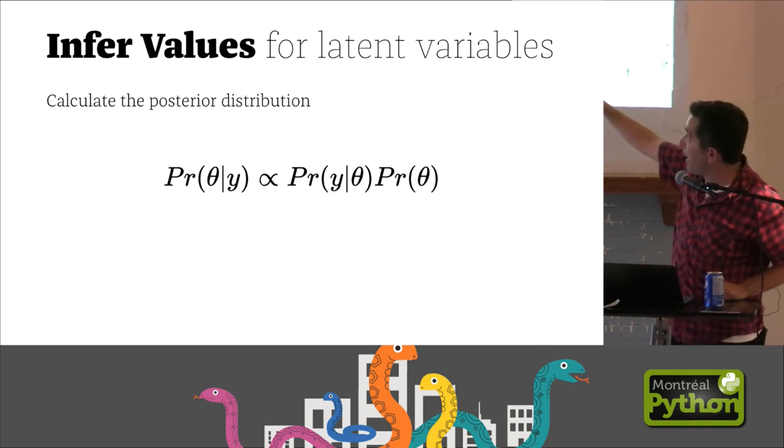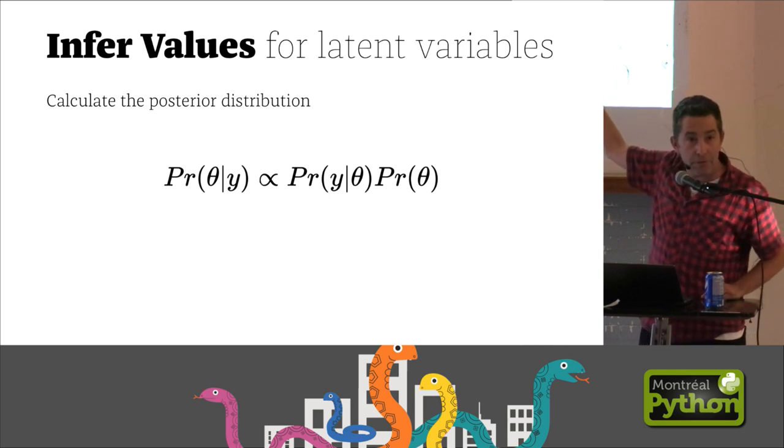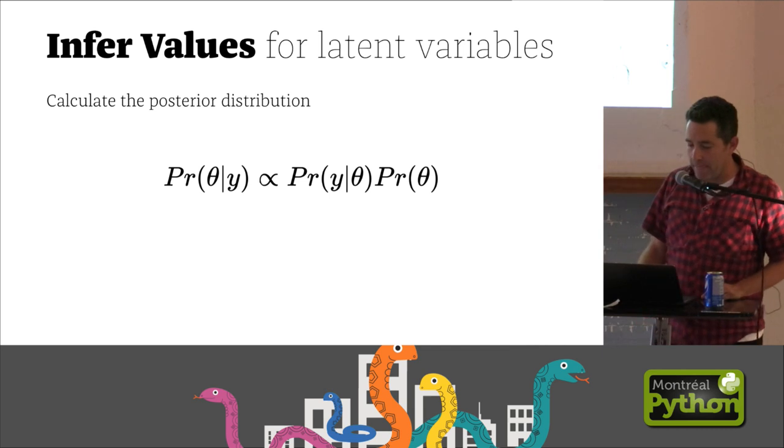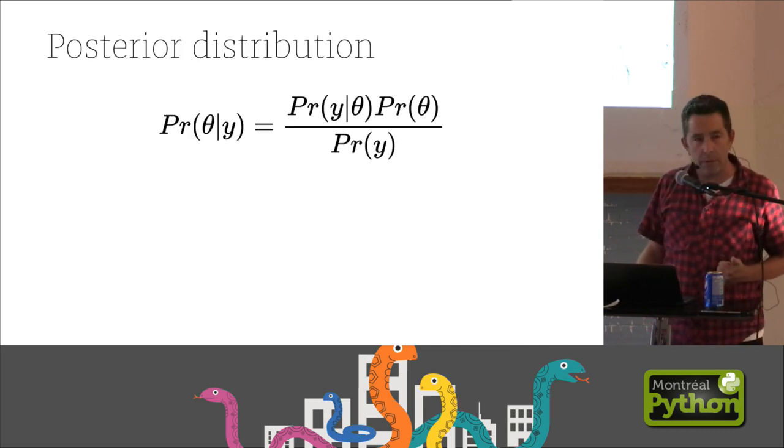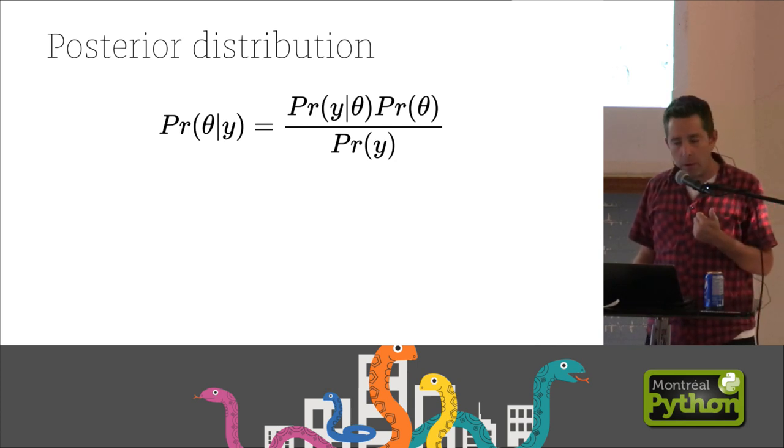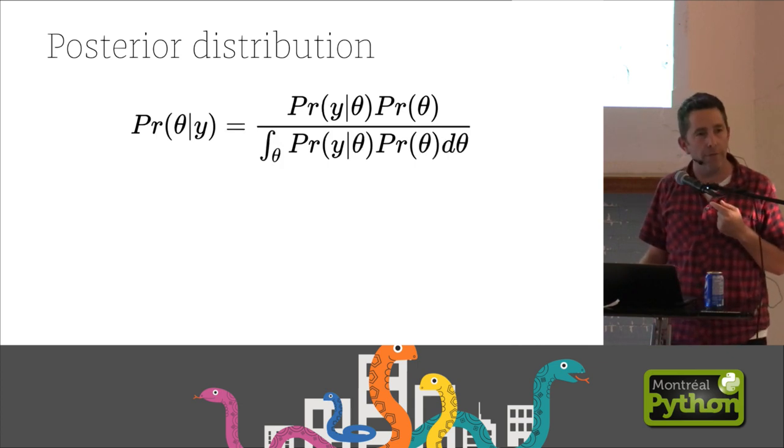And then we combine all of these things together to get a posterior distribution. There's our likelihood, there's our prior. And what I've written here is this symbol that means proportional to. It's not quite equal. It's equal up to a constant. And the constant is this probability of y. The probability of the data. This is a marginal probability. What it is, it's just the numerator integrated over all of the theta. So you integrate out all your variables.